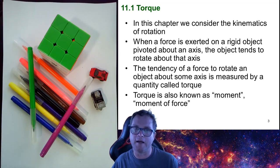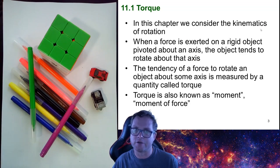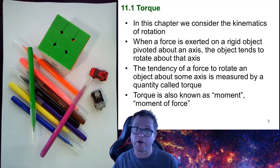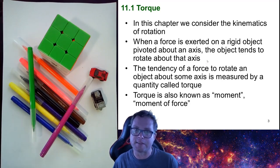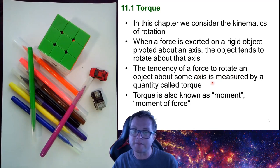We start by discussing torque. In this chapter, we'll consider the kinematics of rotation — the forces which bring about rotational motion. When a force is exerted on a rigid object pivoted about an axis, the object tends to rotate about that axis. The tendency of the force to rotate an object about this axis is measured by a quantity called torque.